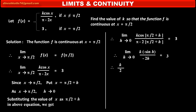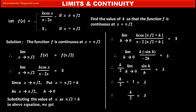The two negatives cancel, giving k/2 into limit as h tends to 0 of sin(h)/h, which equals 3. Since the standard limit of sin(h)/h as h tends to 0 is 1, we get k/2 into 1 = 3. Therefore k/2 = 3, and so k = 6.